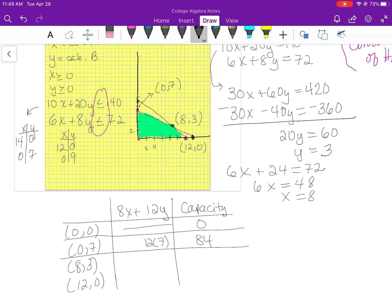If I put in (8,3), that's going to be 100. If I put in 12 times 0, I'll have 8 times 12, which is 96.